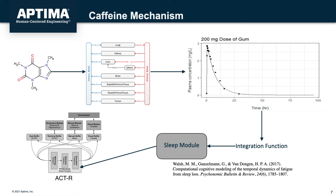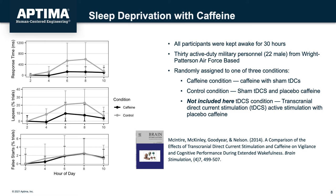Determining which parameters in ACT-R to map these concentrations to was a primary goal of this research. We started by focusing on the modules recruited by the task. The task modeled is the psychomotor vigilance task, or PVT. Previous research has successfully explained a lot of data in this task with ACT-R models. In addition, we focused on parameters in the ACT-R sleep module as the data we modeled was collected from fatigued individuals. This work is looking to explain the effects of caffeine on fatigued people.